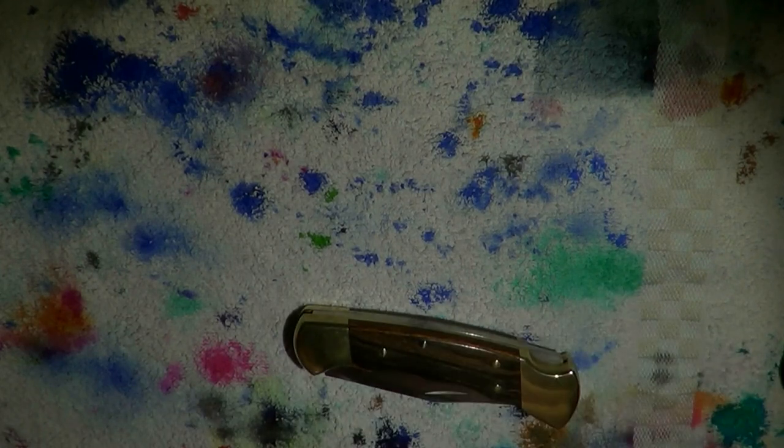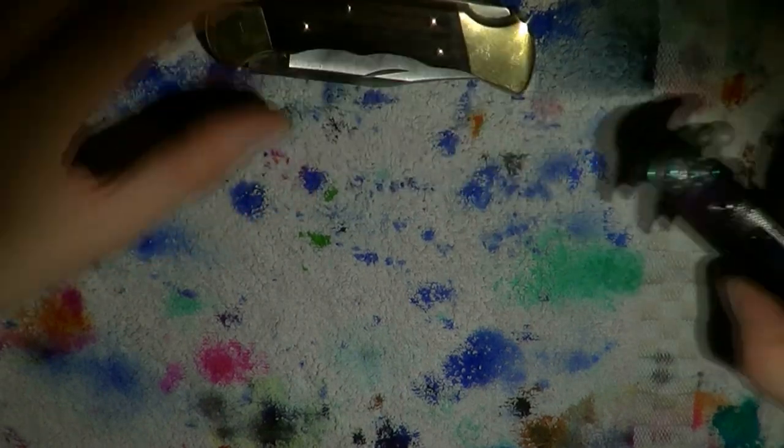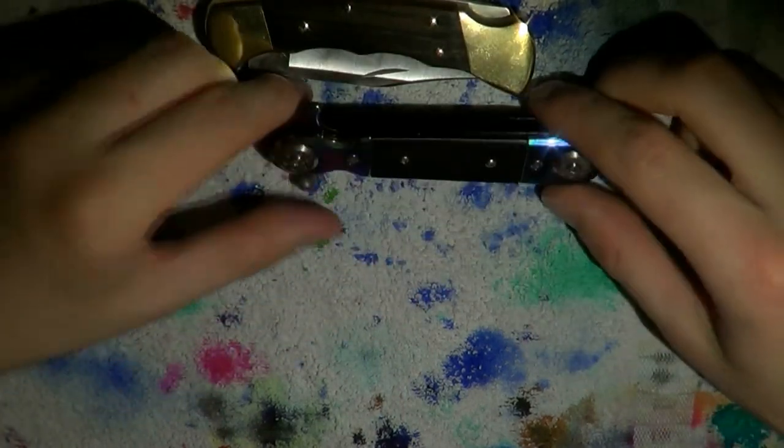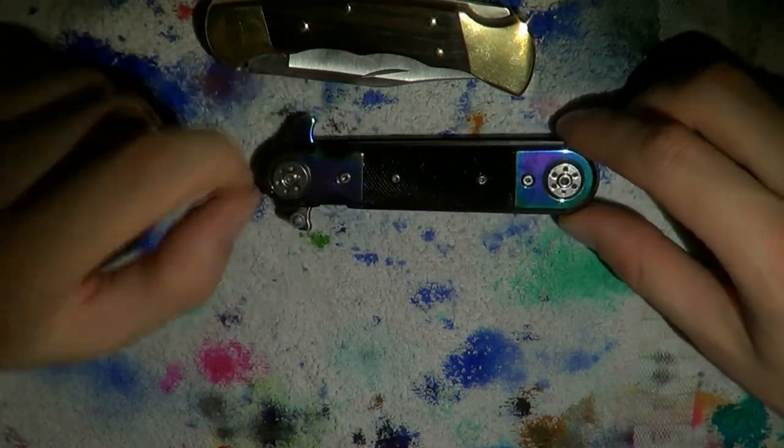I think those are the types that you will find most often. This is a Buck Ranger which has a back lock, and this is an Emtek knife, and this has a liner lock.